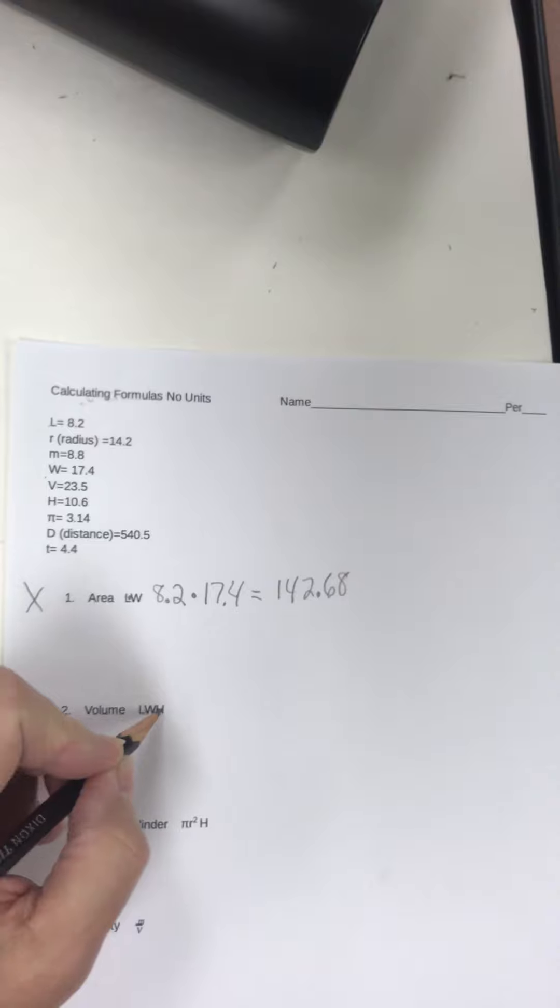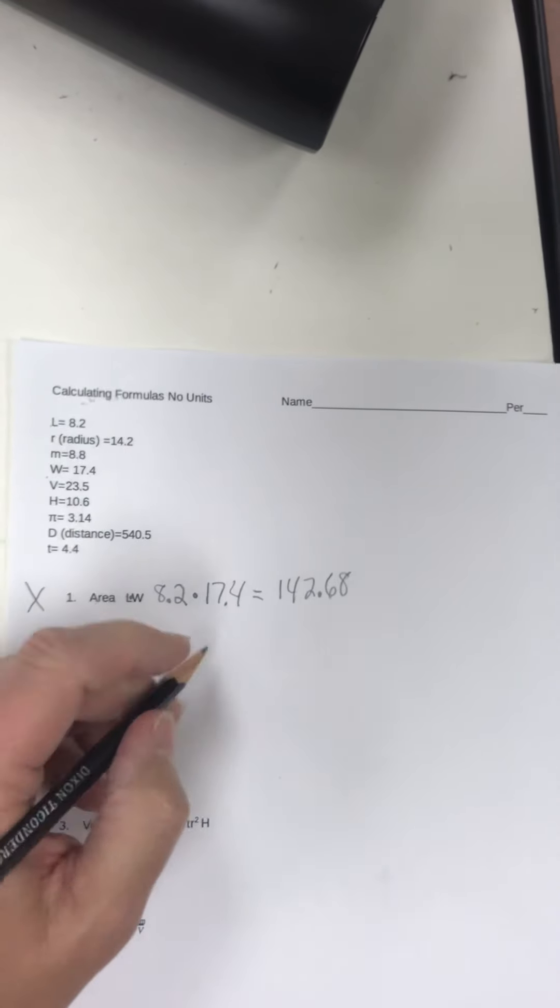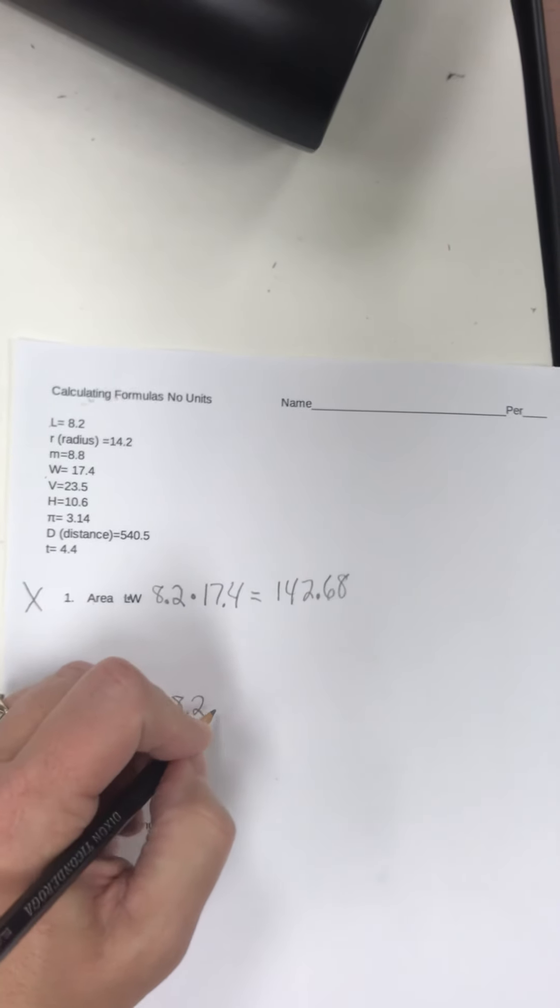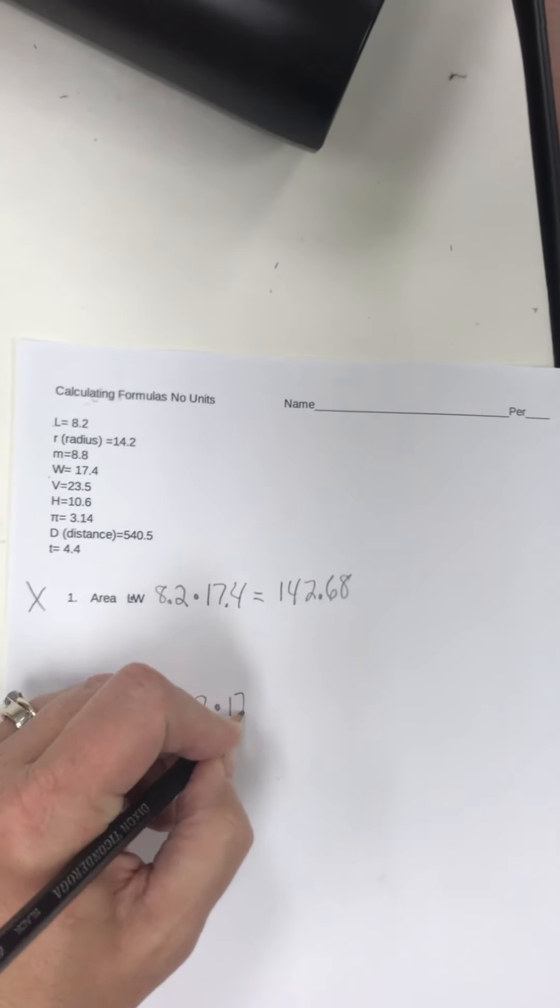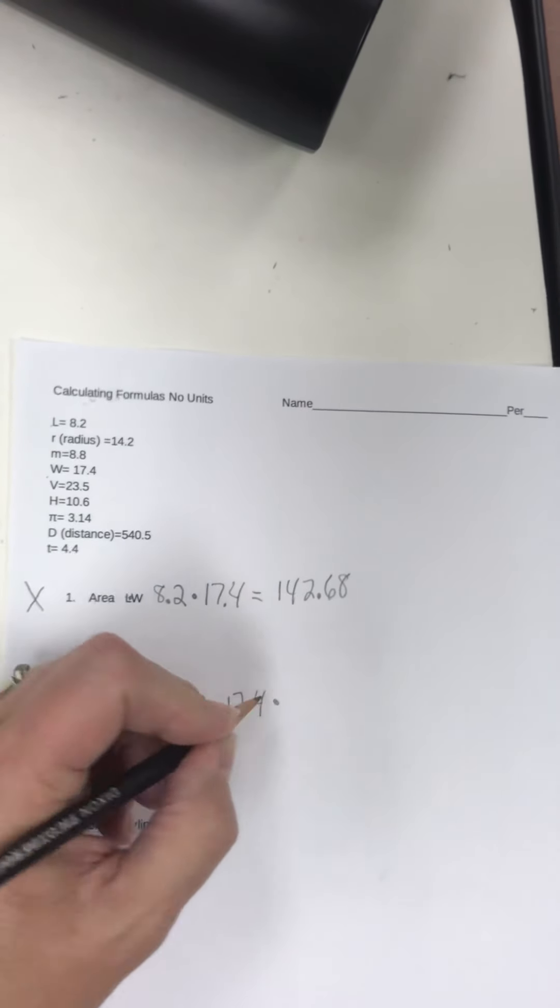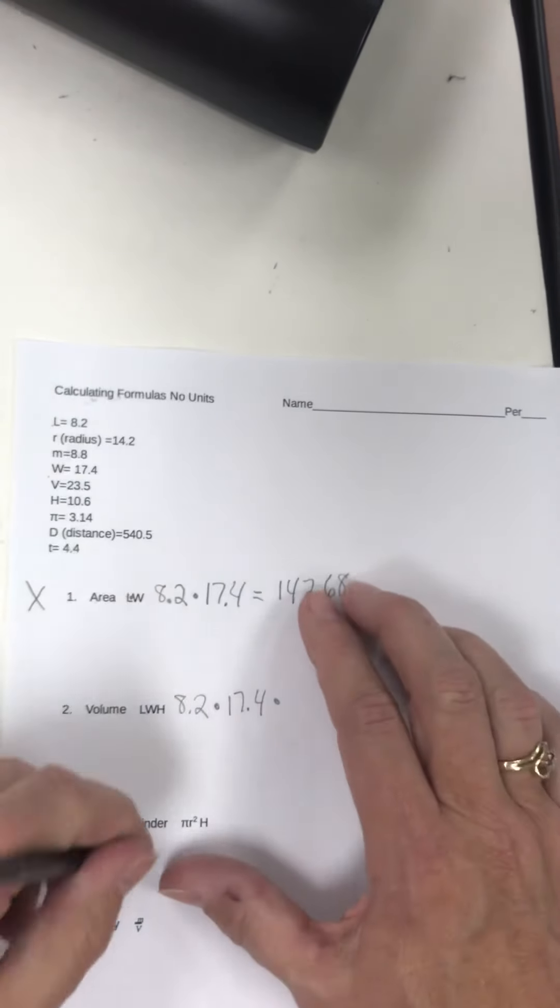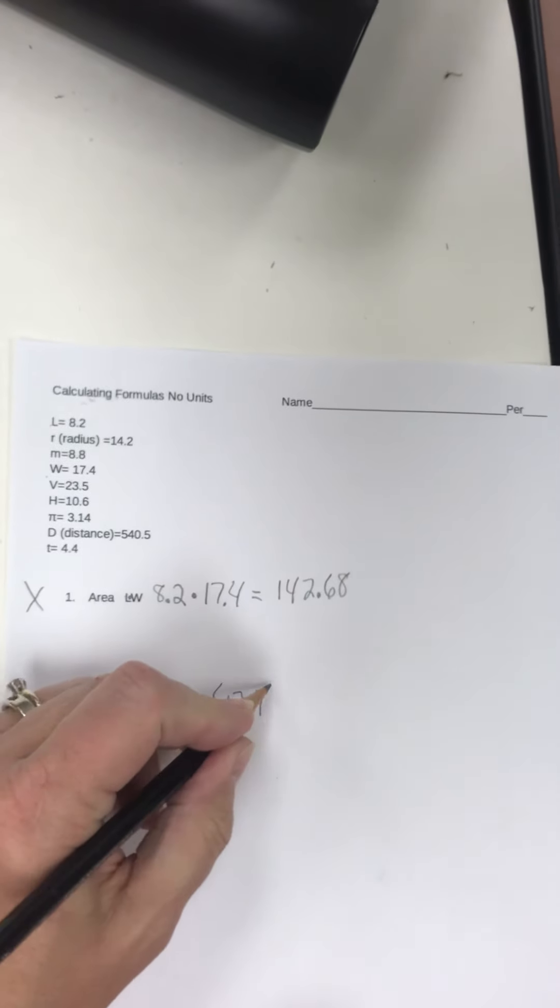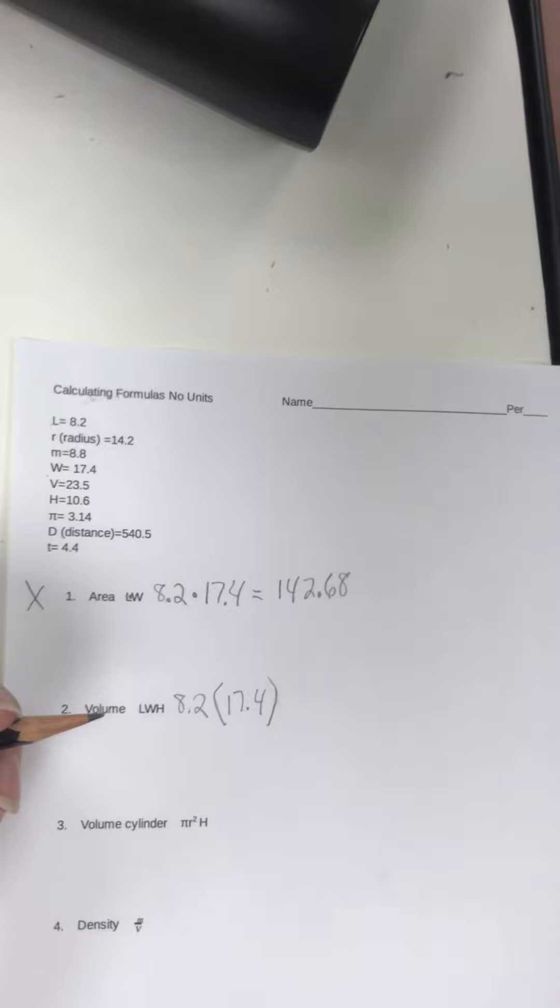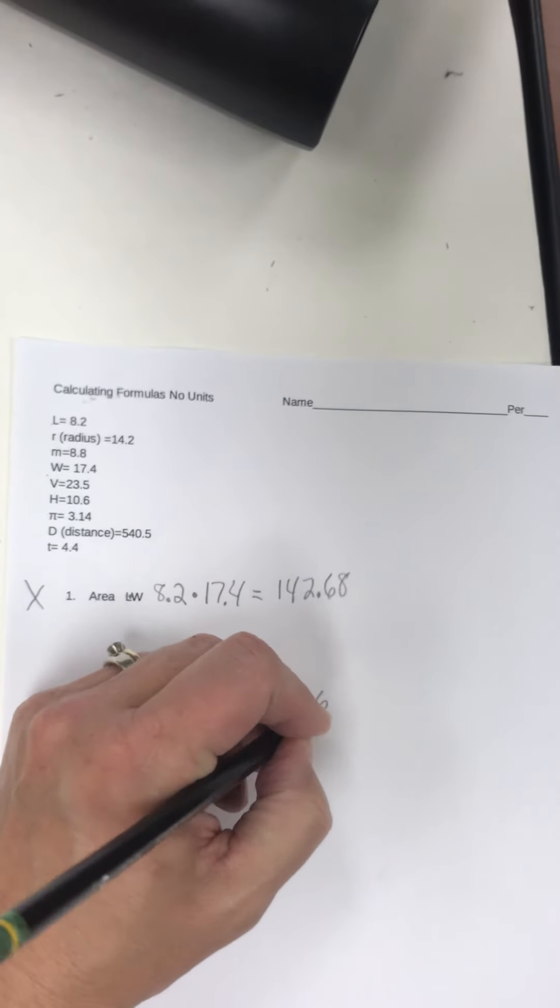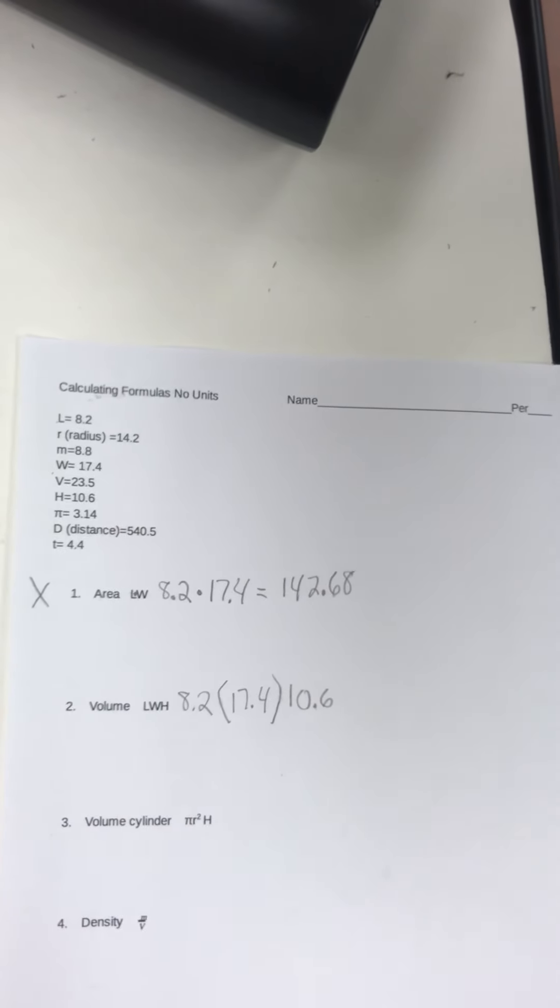All right, LWH. So I'm going to replace L with length, 8.2. I'm going to replace W with W times 17.4. Notice I used a dot, not an X. I could also, instead of dots, I could put parentheses around some of them like this if I wanted to. And H is 10.6. Notice when I put the parentheses, there's still no X, but I know it's multiplied because there's no symbol.